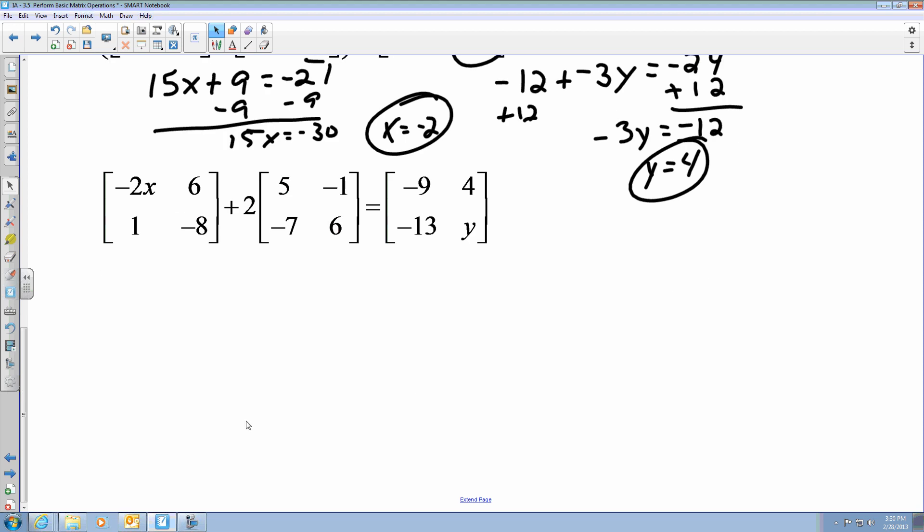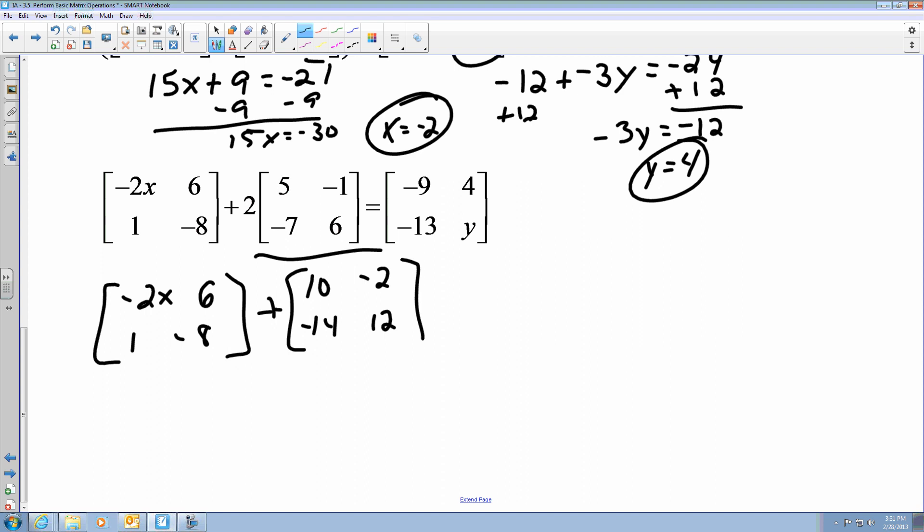Looking at the next problem, what I have to do first is I have to multiply by 2 to just the second matrix. Because there's no parentheses involved for both of them, I just have to multiply the first one. So I'm going to leave the first one as is, so it's negative 2x, 6, 1, negative 8, plus, now I'm going to multiply all these by 2. So I got 10, negative 2, negative 14, 12. And I need to find them to equal negative 9, 4, 13, and y.